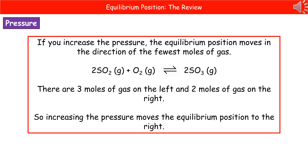So when we consider the equilibrium position, if we increase the pressure, it's going to move in the direction of the fewest moles of gas, which means it moves towards the right, because there are only two moles of gas there compared to the three on the left.